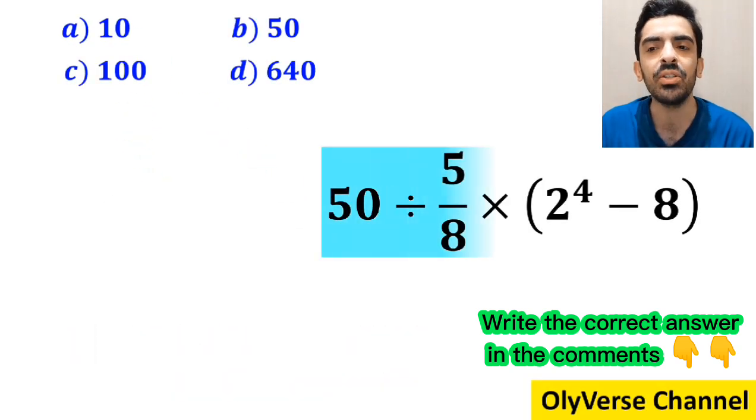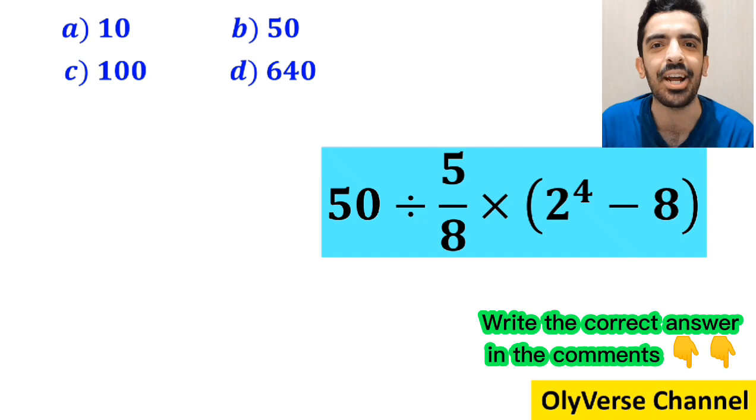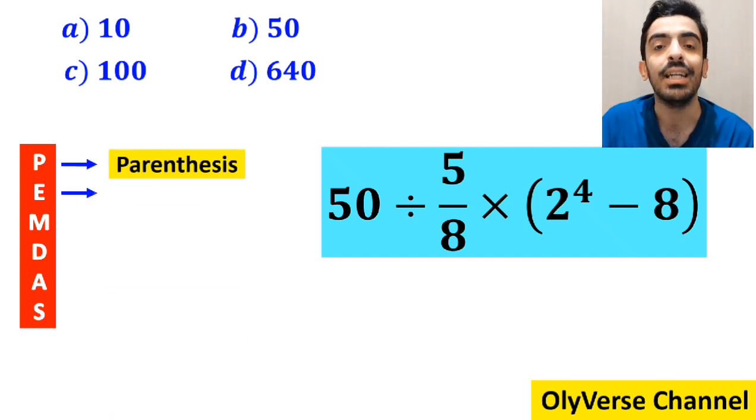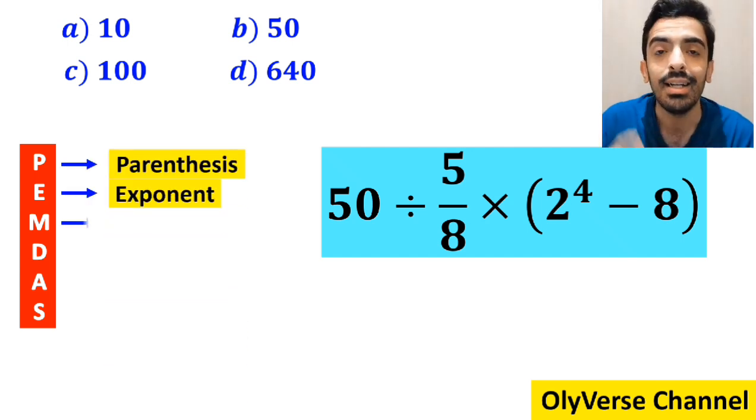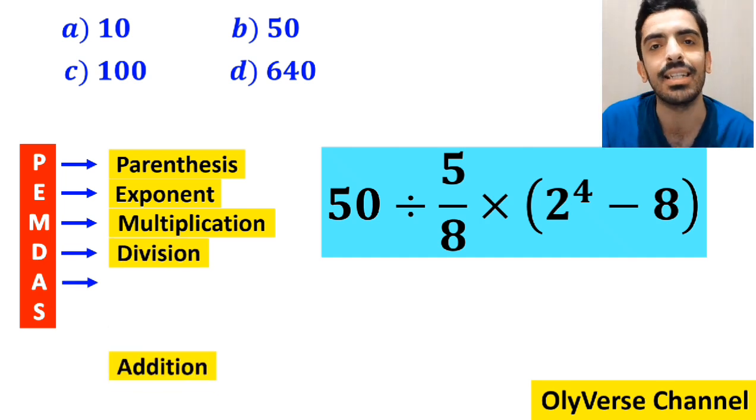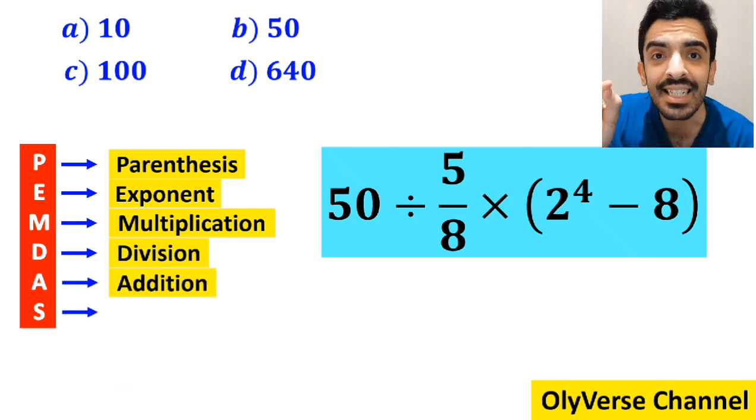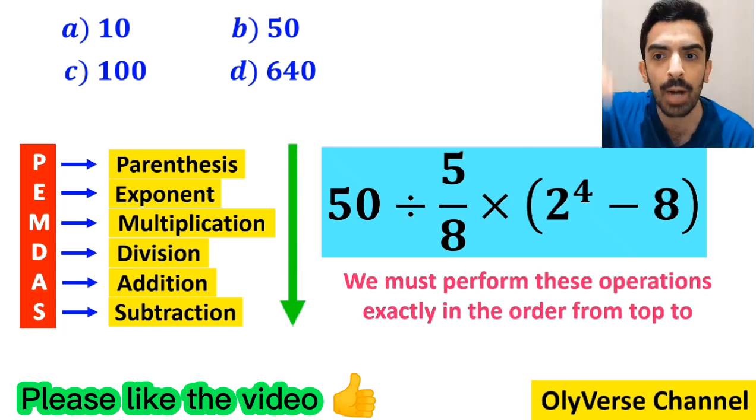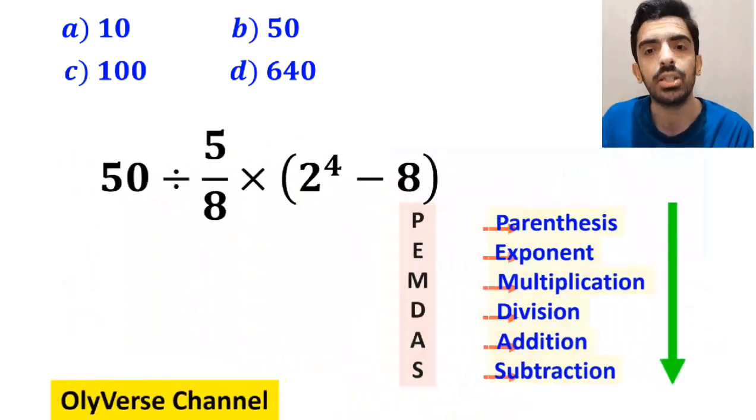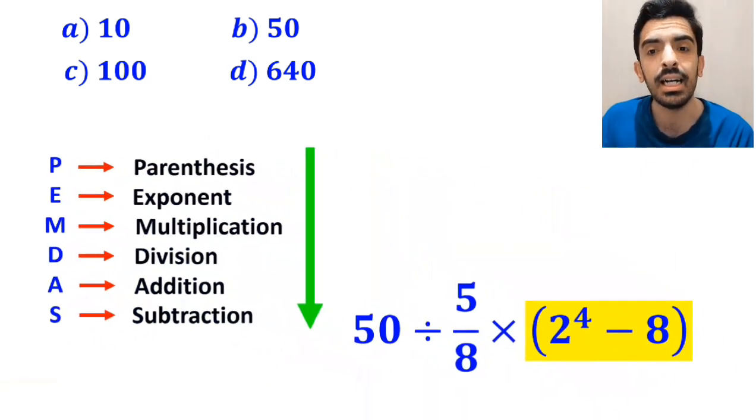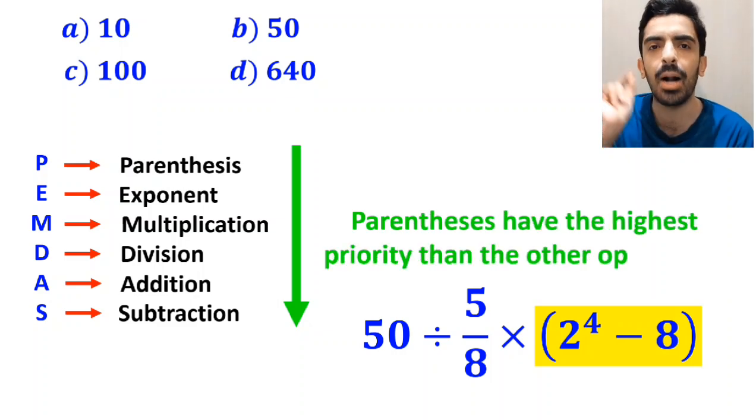Now let's go through this question step by step and solve it together. To solve this problem, we need to follow a rule called PEMDAS. We must perform these operations exactly in order from top to bottom as stated in the PEMDAS flow. We should start with the expression inside the parenthesis first because parenthesis have the highest priority than the other operations.